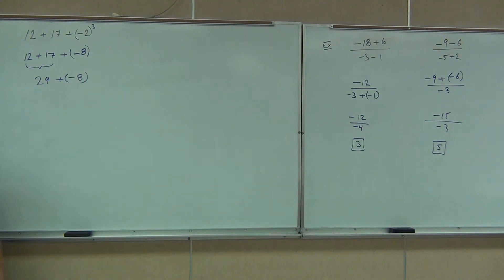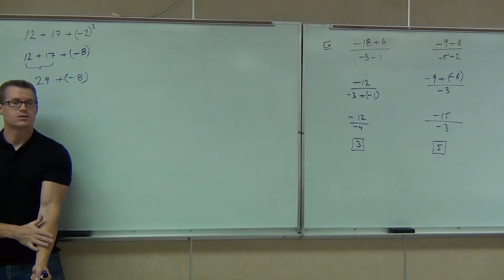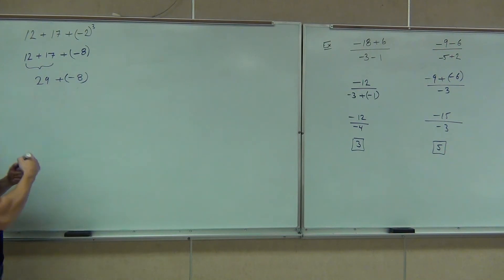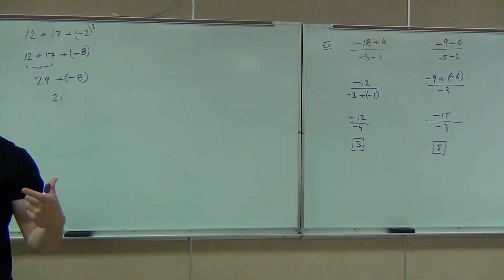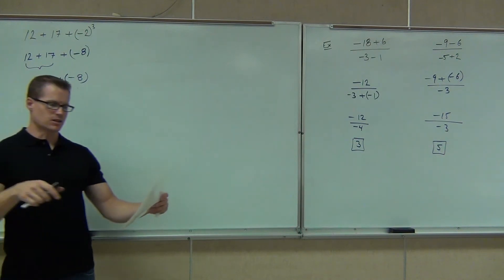We've got 29 plus negative 8. Addition rule says we're going to add or subtract. What do you think? Subtract. And is it going to be positive or negative? Positive. You subtract. Get the sign of the bigger number, because we're using addition rules there. Okay. Do one more on your own. We'll go over it pretty quickly, and then we'll practice a lot of this tomorrow.